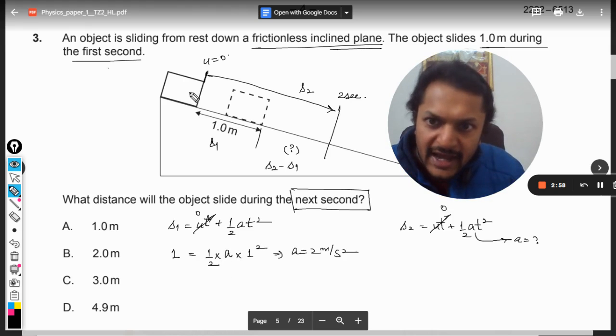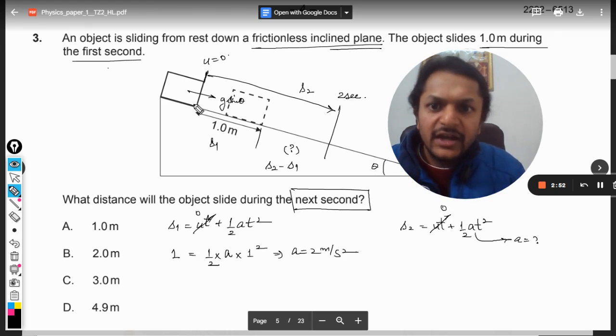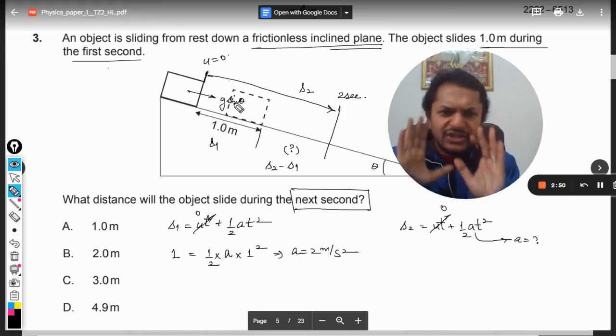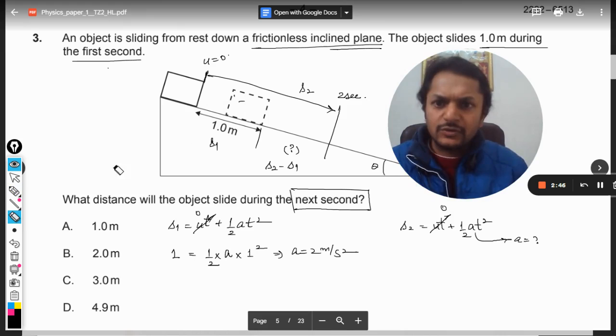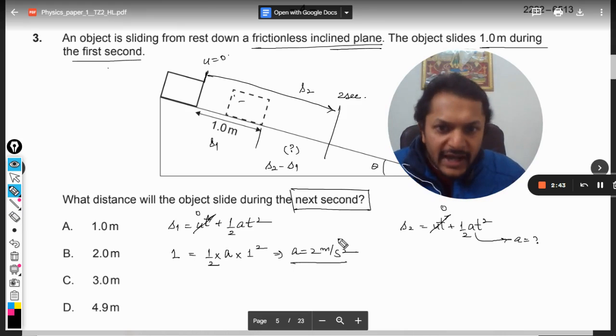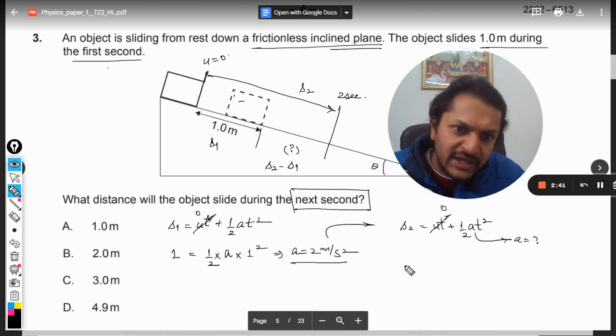And the acceleration will be g sine theta, you know. If this is theta, it can be taken as g sine theta - just telling you for the sake of information, has nothing to do with this question. So a is two and now we are going to substitute this here.